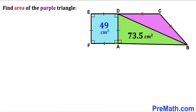Welcome to pre-math. In this video we have a compound shape that consists of a blue square, a green right triangle, and a purple isosceles triangle, as shown in the diagram. The area of the blue square is 49 centimeter square, the area of the green right triangle is 73.5 centimeter square, and our task is to calculate the area of the purple triangle.